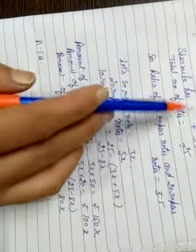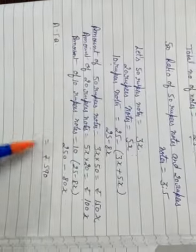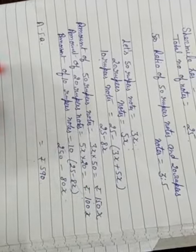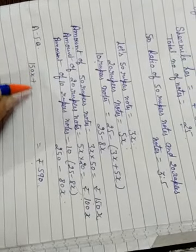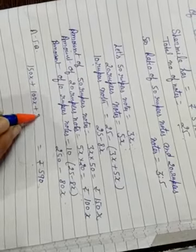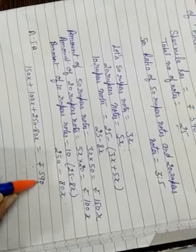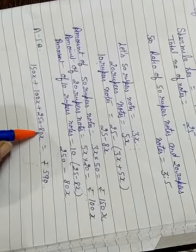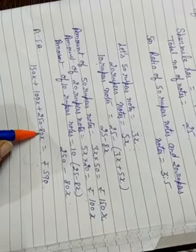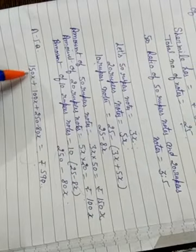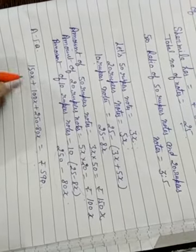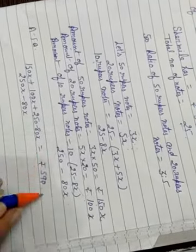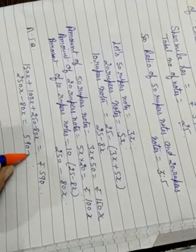In this question, Sharmila has 590 rupees. So, it means if we add these three, it will equal 590. 150x plus 100x plus 250 minus 80x is equal to rupees 590. Now solve it. 150x plus 100x plus 80x, how much is that children? Calculating children, it's 250x minus 80x plus 250. 250x minus 80x is 170x, and 250 transposing to right side gives 590 minus 250.